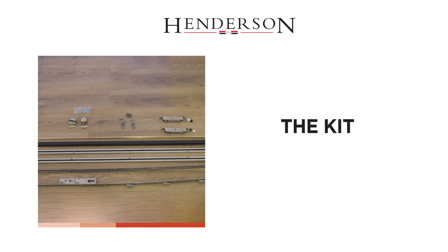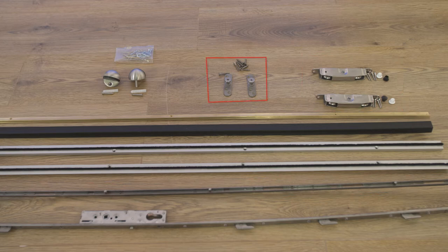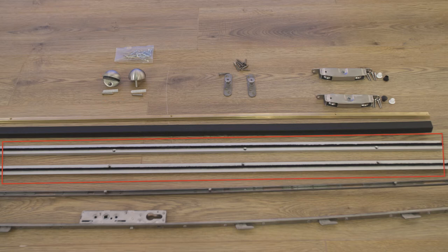The kit: locking bar, keep plate, bottom rollers, top guides, bottom rail, door stops, interlocking profiles, polypropylene channel.